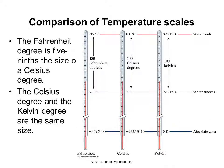Let's look at these thermometers to compare the scales. The freezing point of water is 32°F, 0°C, and 273.15 K. The boiling point is 212°F, 100°C, and 373.15 K. Absolute zero is 0 K, −273.15°C, and −459°F. In going from freezing to boiling, it requires 180 degrees Fahrenheit, or 100 degrees Celsius.